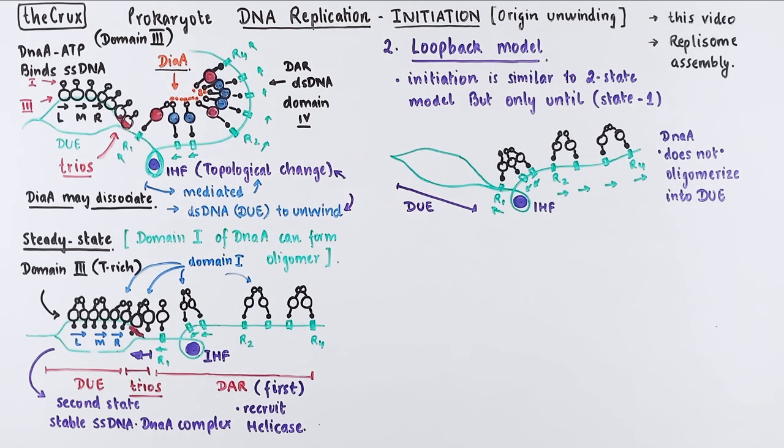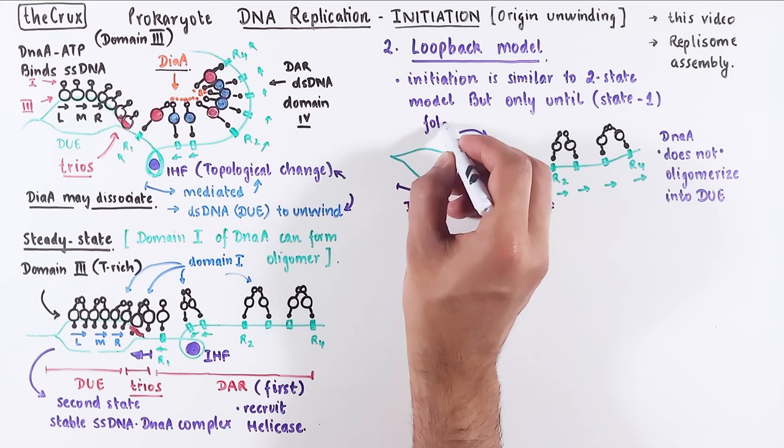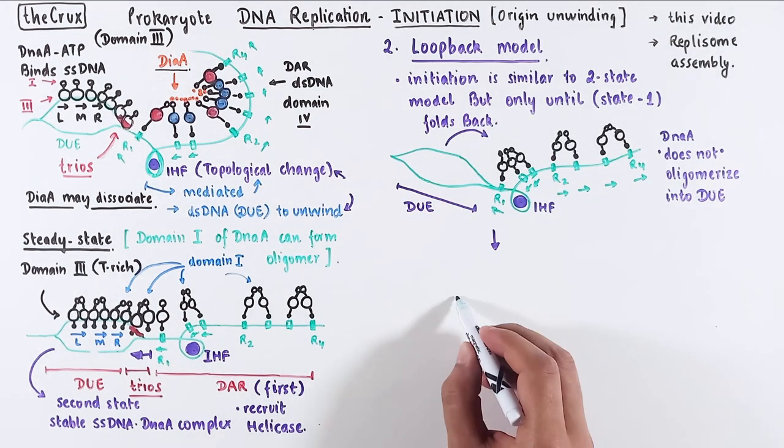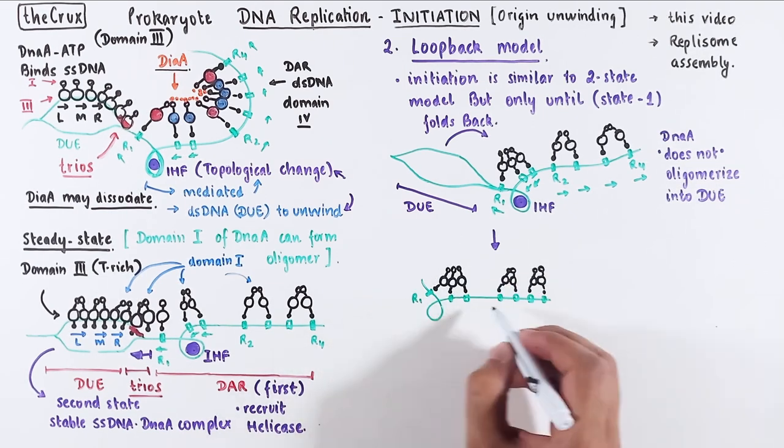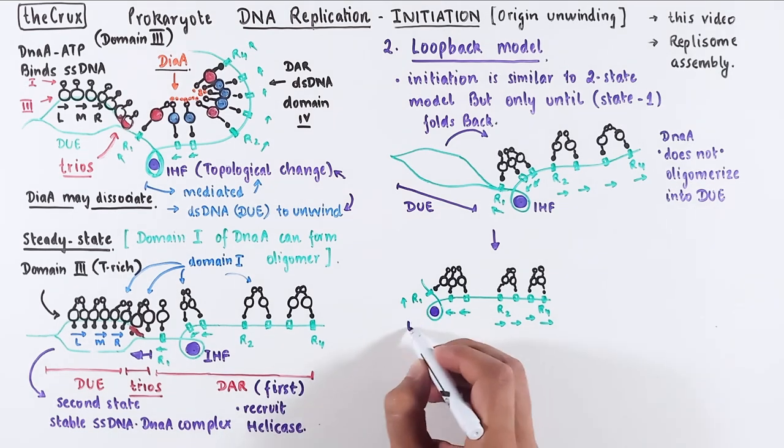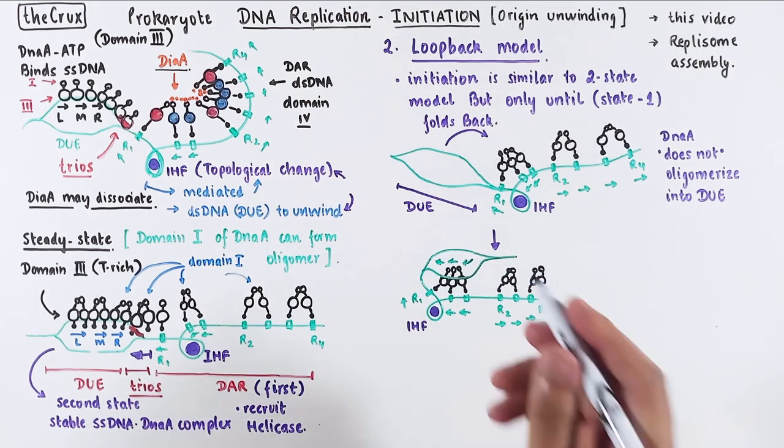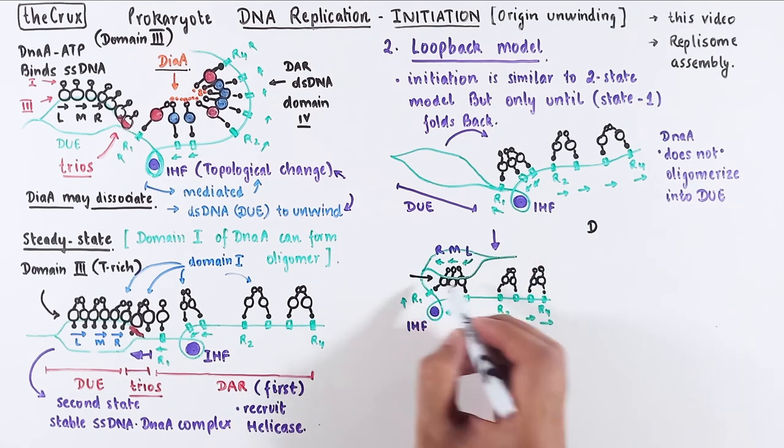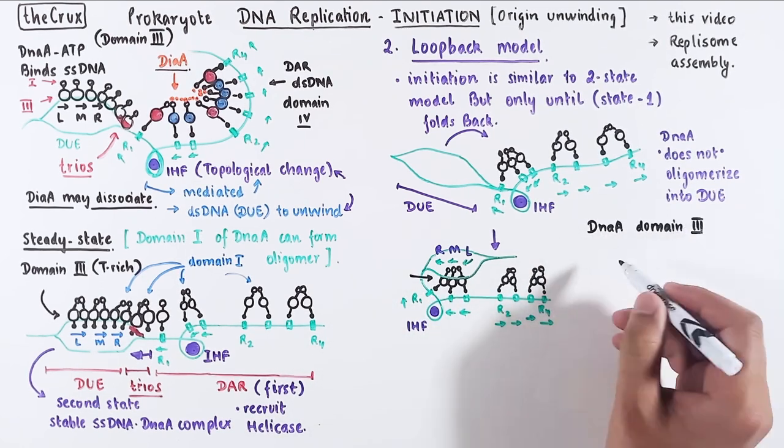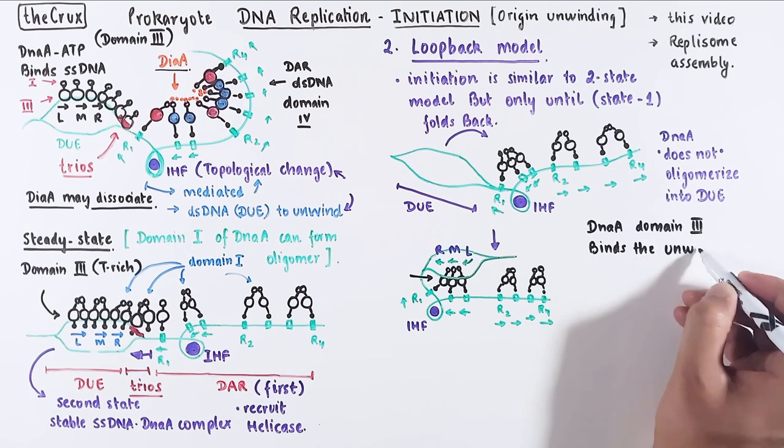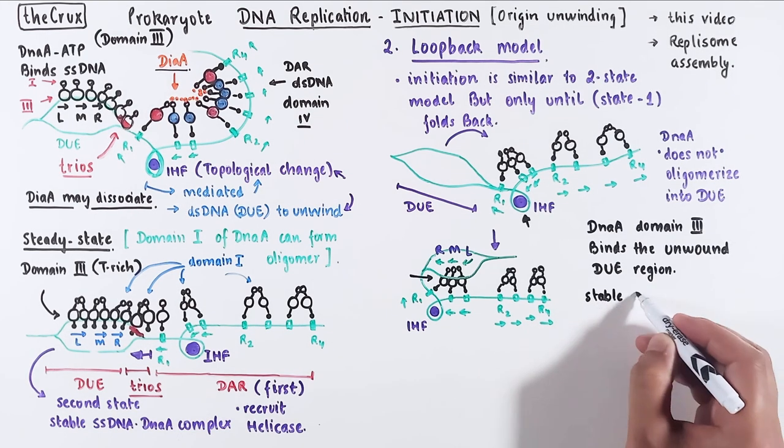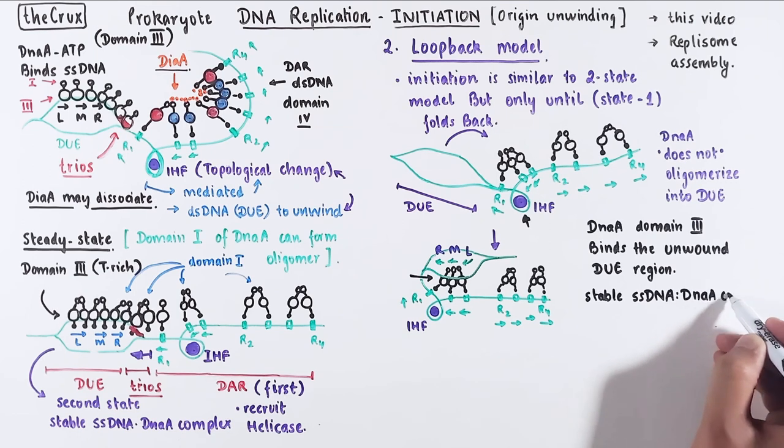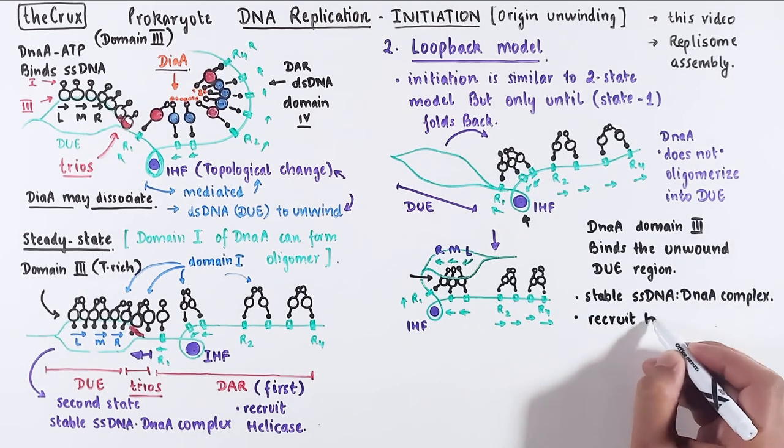In the case of loopback model, it does not. What happens instead is that the melted DUE region folds back. What this means is that the single strands from the DUE region contact the DnaA protein present on the DAR. This contact means that the domain 3 of DnaA are associating with the DUE region, while it is bound to the DARs at the same time. Once again, this is possible because of the topological change created by the IHF protein. And this leads to the formation of a stable single-strand DNA and protein complex, which is ready to recruit helicases and other factors.